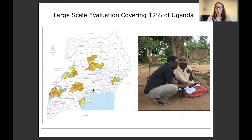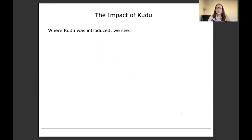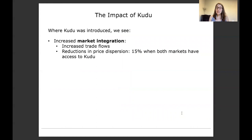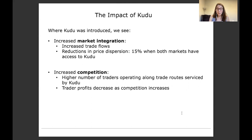What is the impact when you introduce this platform on market integration at a macro level and farmer welfare at a micro level? We evaluated the impact of KUDU using a large-scale randomized controlled trial covering 12% of Uganda. We had control and treatment communities, and in treatment communities we randomly promoted the platform. What we find is that in treatment communities where KUDU was introduced, we see first increases in market integration: increased trade flows, a higher probability that two markets are trading with each other when both are connected on KUDU, and higher volumes of grain flowing between markets. We also see, as a sign of greater integration, reductions in the gap in prices between markets — a convergence of prices across surplus and deficit areas. When two markets are connected to KUDU, we see a 15% reduction in price dispersion. We also see an increase in competition — higher numbers of traders operating along trading routes serviced by KUDU — and potentially as a result, a reduction in trader profit, suggesting it is cutting into the markups of intermediaries.